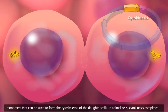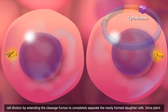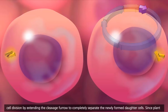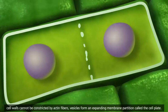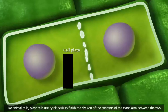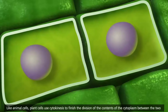In animal cells, cytokinesis completes cell division by extending the cleavage furrow to completely separate the newly formed daughter cells. Since plant cell walls cannot be constricted by actin fibers, vesicles form an expanding membrane partition called the cell plate. Like animal cells, plant cells use cytokinesis to finish the division of the contents of the cytoplasm between the two identical daughter cells.